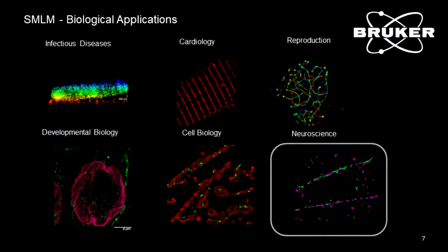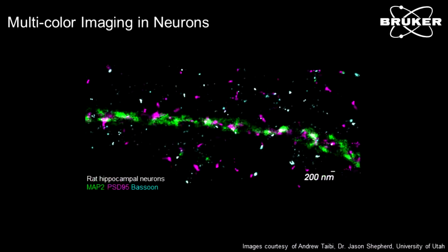I'll just go through some basic examples. The VUTARA is used in various systems, but I'll focus on neuroscience applications today. We can do simple experiments like this: a three-color labeled hippocampal neuron in culture. The dendrites are labeled with MAP2, PSD-95 labeled in magenta, and the presynaptic marker bassoon labeled in cyan. You can see things like synapses forming in culture quite simply.